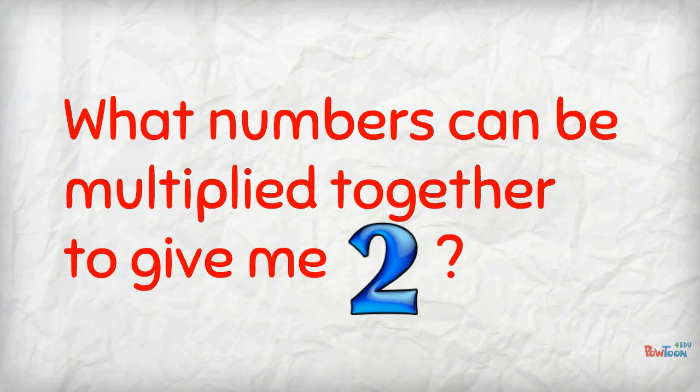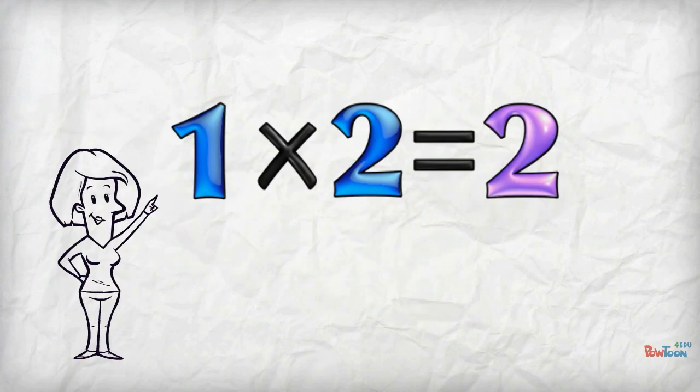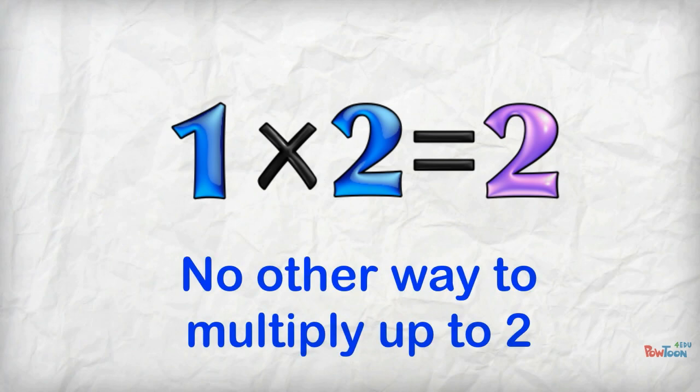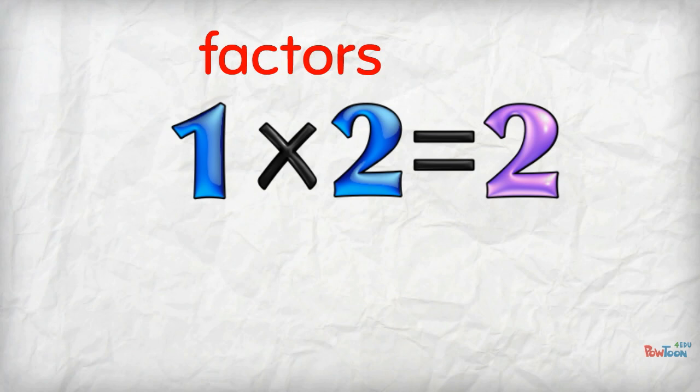Say to yourself, what numbers can be multiplied together to give me 2? 1 times 2 is 2, or 2 times 1 is 2. There is no other way to multiply up to 2. 2 has 2 factors...